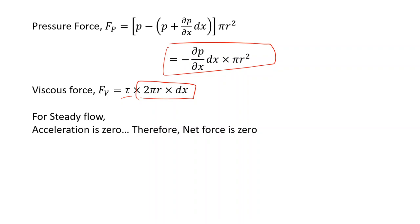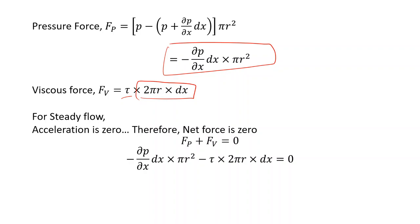For steady flow, acceleration is zero, and therefore net force is also zero. So pressure force plus viscous force equals zero: -(∂P/∂x) * dx * πr² - tau * 2πr * dx = 0. From this we can derive that tau = -(∂P/∂x) * r/2. This gives us the shear stress distribution across the pipe cross-section.